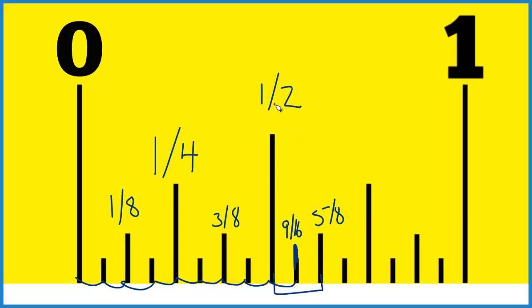So halfway between one half and five eighths on a ruler or on a tape measure, that's nine sixteenths of an inch. That's where you'll find that halfway mark, right between one half and five eighths of an inch.